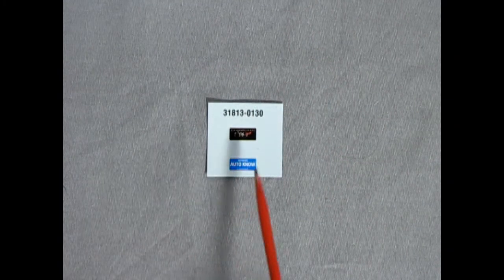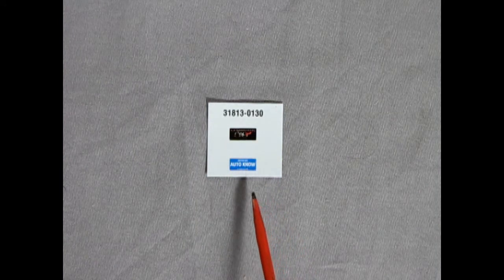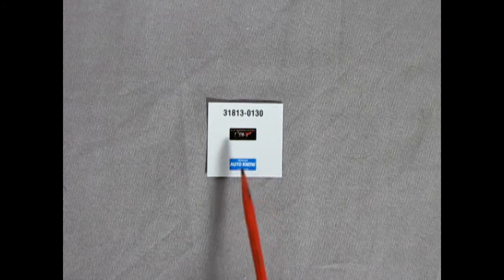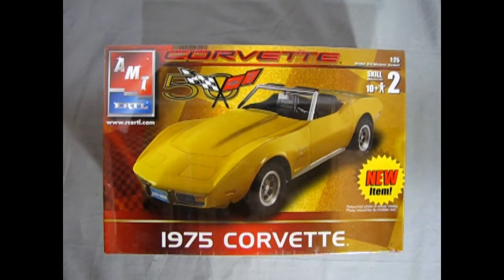Finally we have our very exciting decal sheet which includes a 50th anniversary license plate for your Corvette as well as a Michigan Auto No license plate. And that completes our look at the AMT Ertl 1975 Corvette Convertible. Now if you've built this model kit in the past we would love to see your photographs of it over on our Facebook page and I'll leave the link for that in the description below.